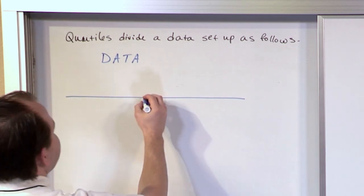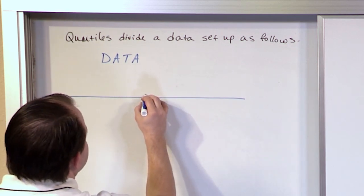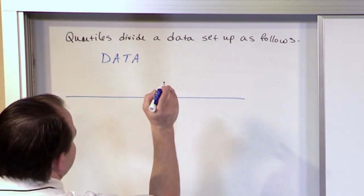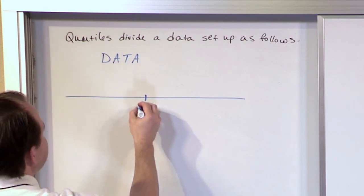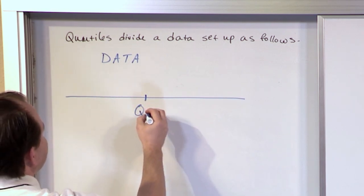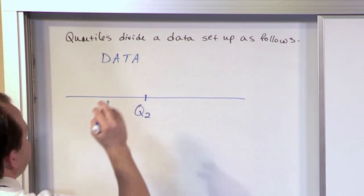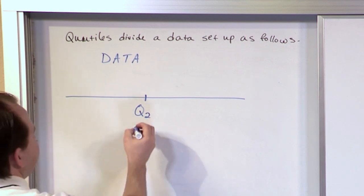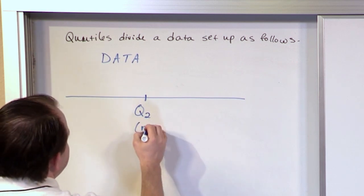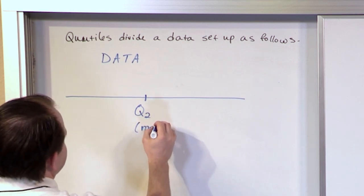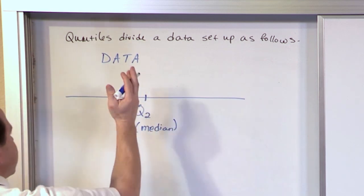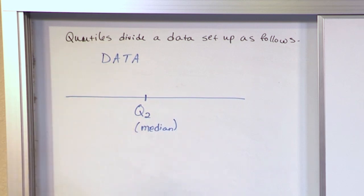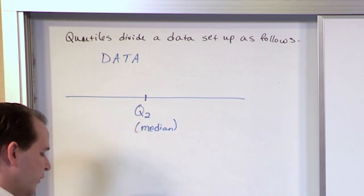So somewhere here in the middle of this data set, remember we talked about the median. Now we're relabeling that in this section. We're calling it the second quartile, which is also called the median. It literally is the middle of the data set. So the second quartile, Q2, is called the median.